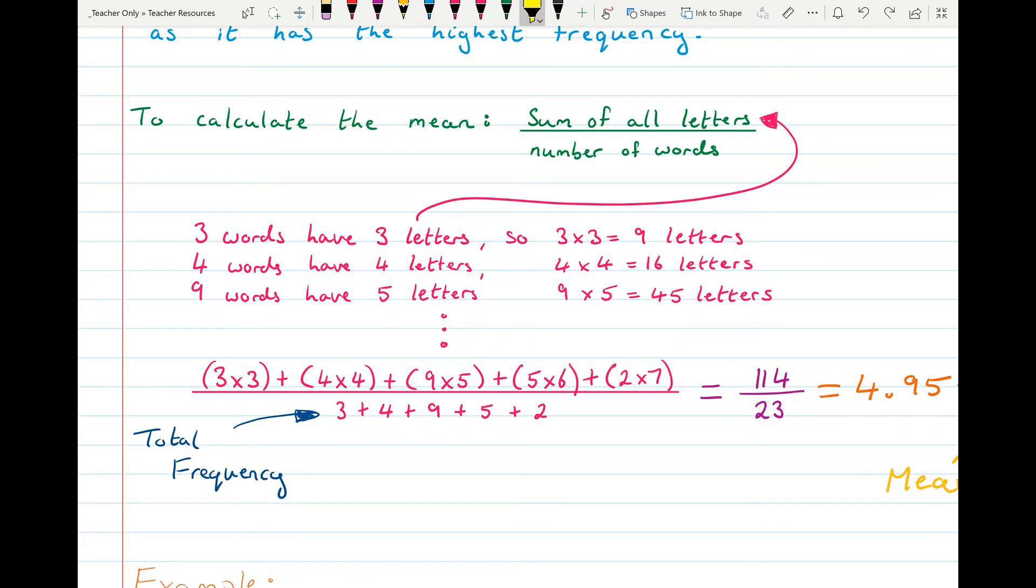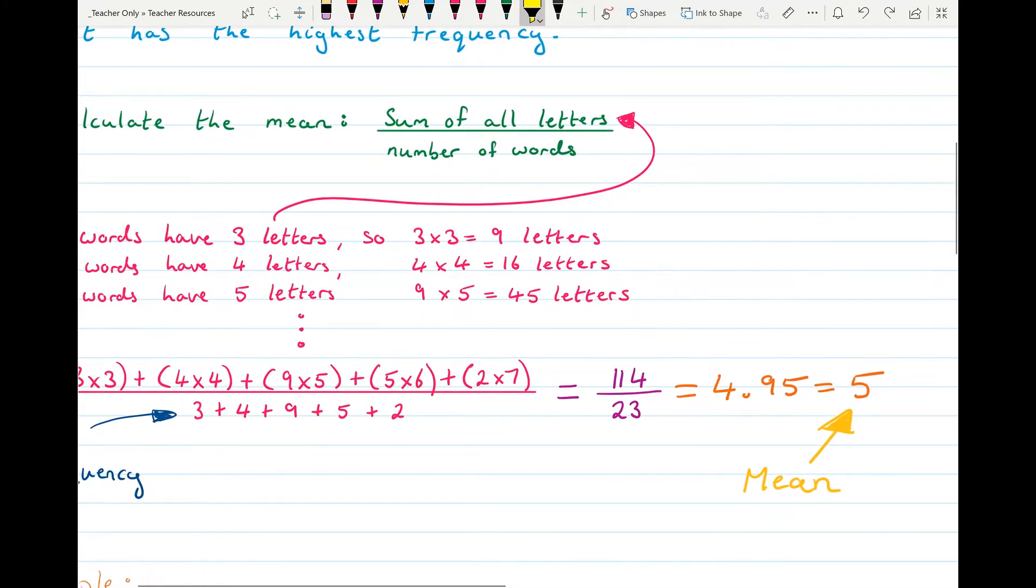144 divided by 23 equals 4.95 so the mean, you can round that to five. So the average number of letters in a word was five.